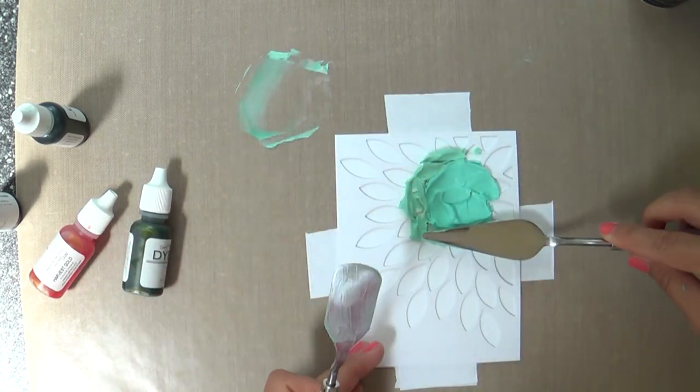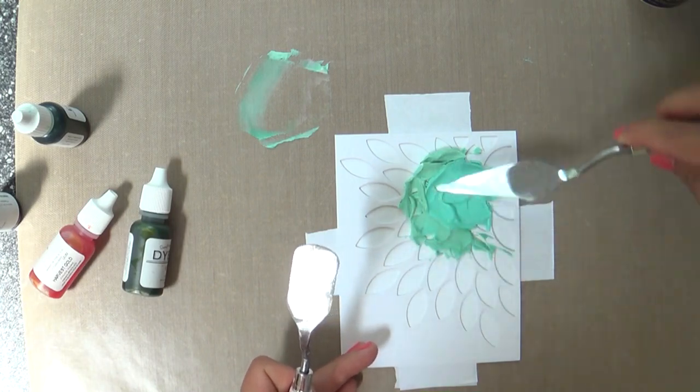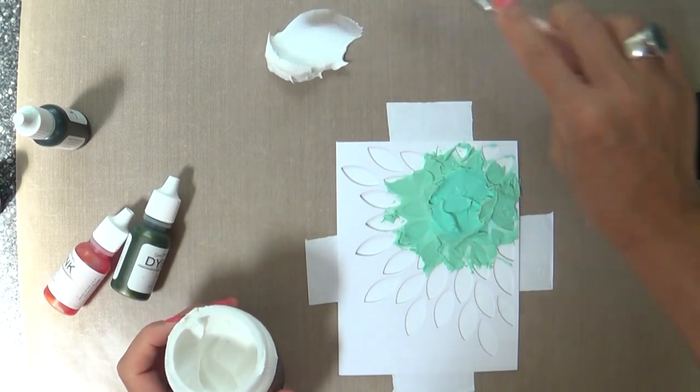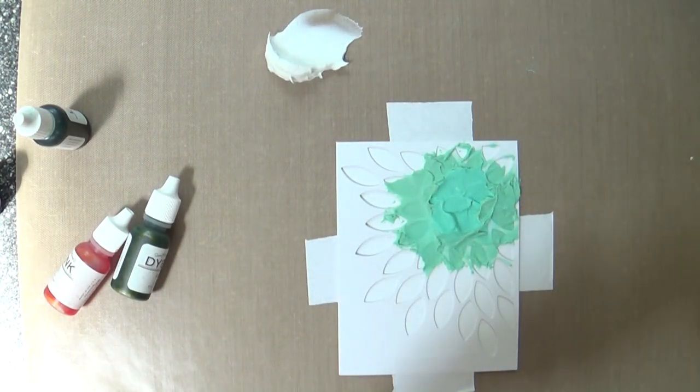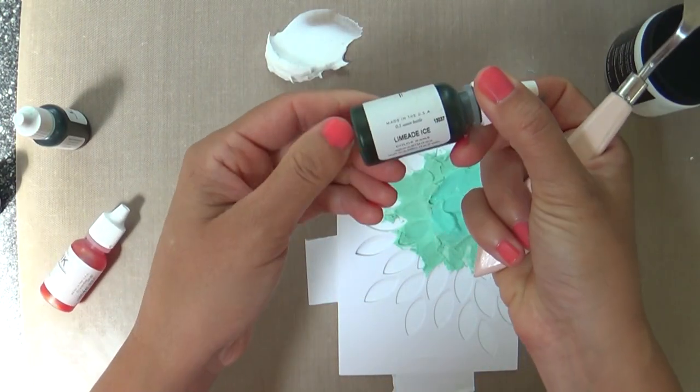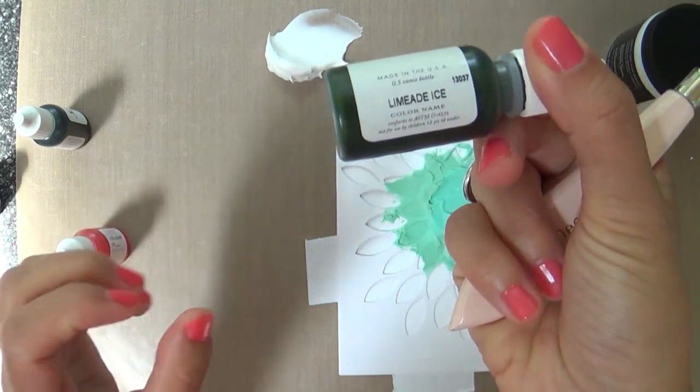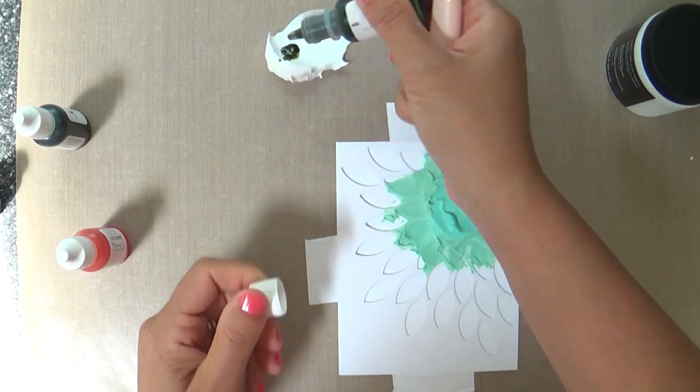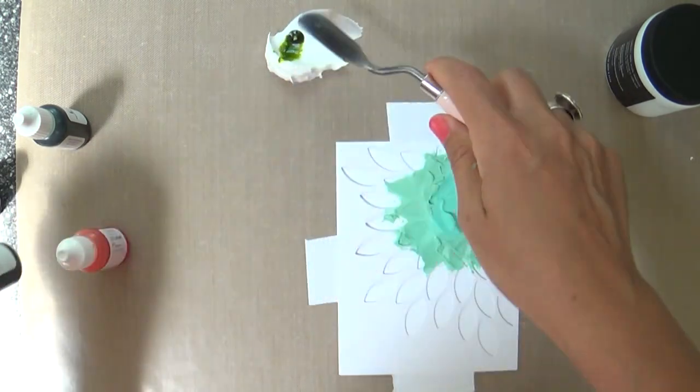I've done this with distress inks work really good for this technique but a lot of different inks work for this as well. Okay so now we're moving on and I think the next color is one of my all-time favorites, limeade ice. If I had to choose what my favorite color was of all the paper tray ink colors it would definitely be hands down limeade ice.